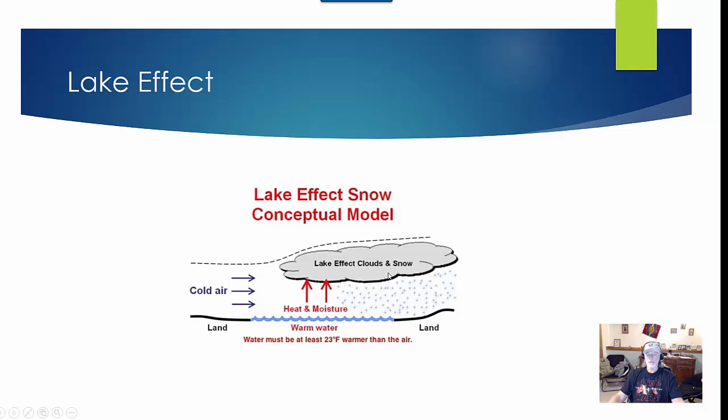Then as that air gets over the land, it starts to condense. The moisture starts to condense, and if it's cold enough, it's going to fall out as snow. US 131 is kind of the cut off around here for lake effect snow. The longer the air stays over the water, the more lake effect snow there's going to be.